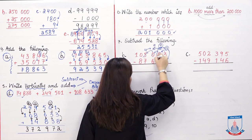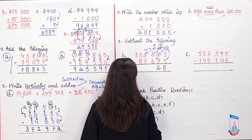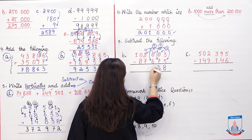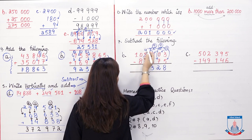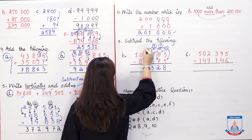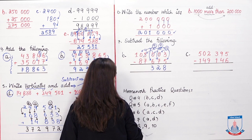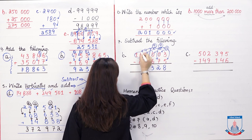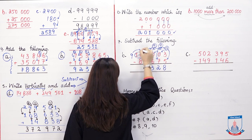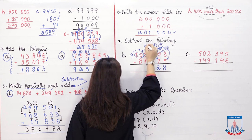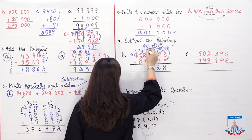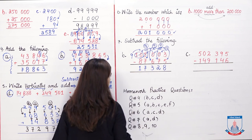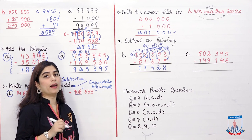Continuing: 9 minus 7 is 2, 9 minus 6 is 3. Then 4 minus 7 is not possible — take carry from behind (0 becomes 10, lend 1 to make 14). 14 minus 7 is 7. Then 9 minus 8 is 1. The final answer is 17,328. Carrying is difficult but not impossible — use arrows to track where you take and give carry.